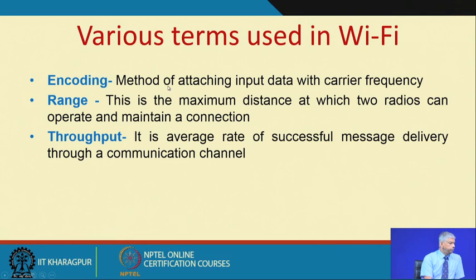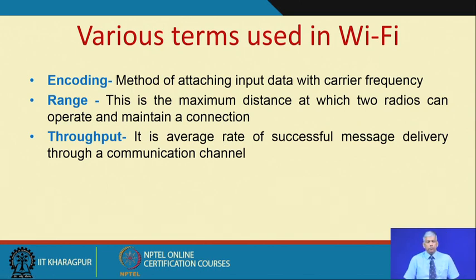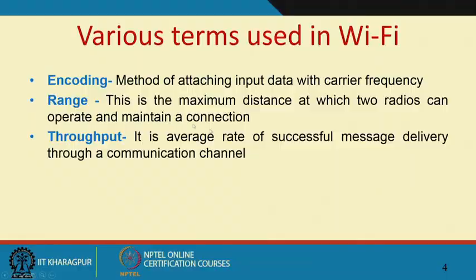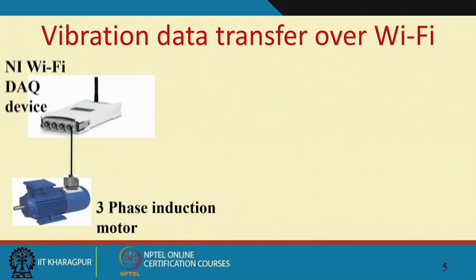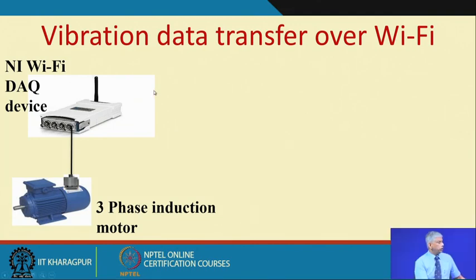Certain terms used in Wi-Fi: modulation is the method of attaching input data with the carrier frequencies. Range is the maximum distance at which two radios can operate and maintain a connection — Wi-Fi towers acquire the signal and retransmit it because there is a certain limit. Throughput is the average rate of successful message delivery through a communication channel. I will show you an example where we are doing vibration data transfer over Wi-Fi in the laboratory.